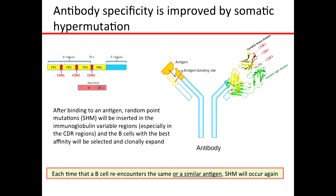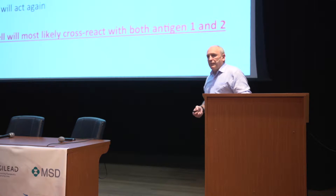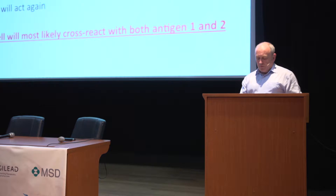Each time a B cell re-encounters the same or a similar antigen, somatic hypermutation may occur. A naive B cell with a particular V, D, J — or V, J — combination is selected; this is the unmutated common ancestor (UCA) or germline. That UCA is selected by antigen number one, then somatic hypermutation improves affinity for antigen one. When a slightly different but related antigen selects again, somatic hypermutation acts again, and the B cell will most likely cross-react with both antigen one and antigen two. This is the fundamental basis of how we're thinking about influenza and about a vaccine strategy called sequential immunization.